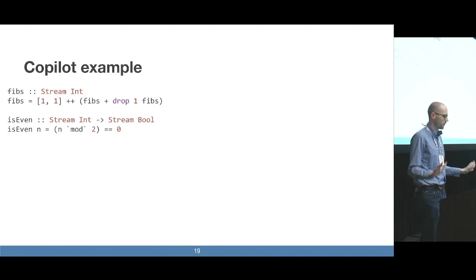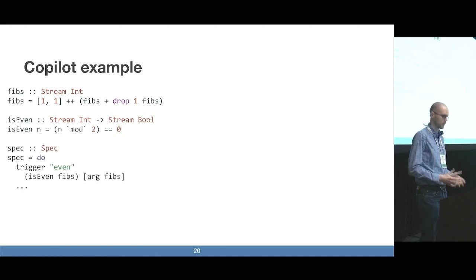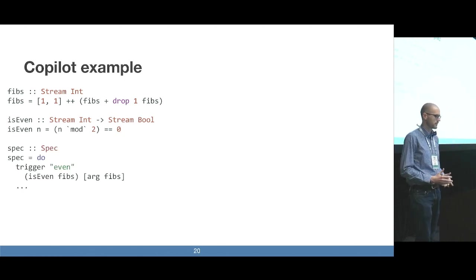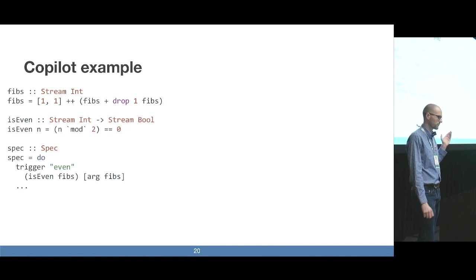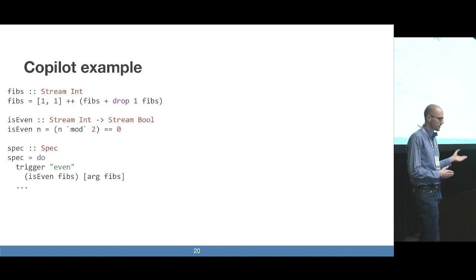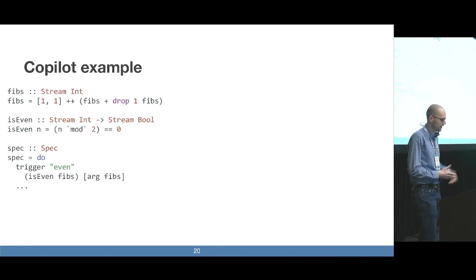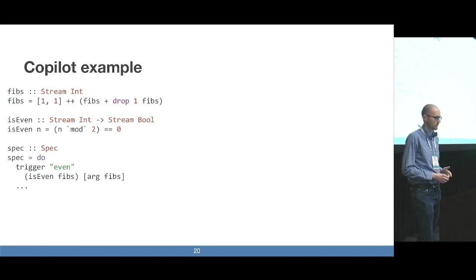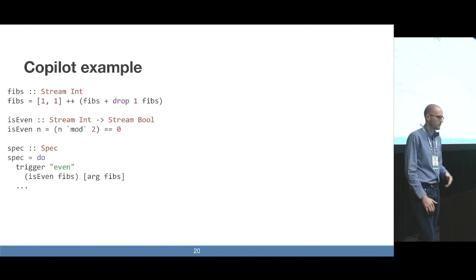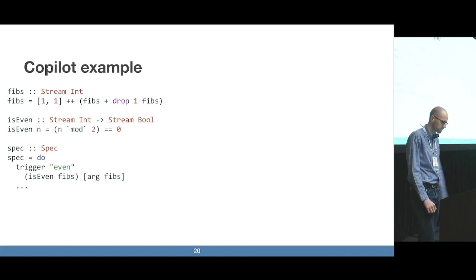Where the rubber hits the road in a Copilot program is writing a specification, which is done with the spec type. A spec consists of one or more triggers. In this example, we have a trigger called 'even'. A trigger takes a stream of booleans, and any time you sample a true value in the stream, the trigger gets fired. That's an indication to the application being monitored that it should take some kind of corrective action. Here we're monitoring if there are any even Fibonacci numbers that we sample.